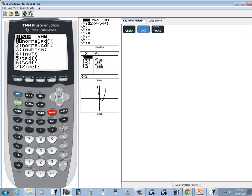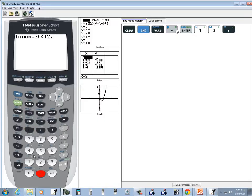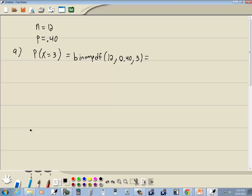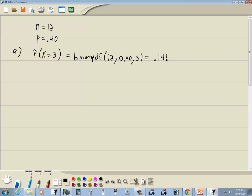Let's see what that gives us. Do second vars and choose binomPDF, then n which is 12, comma, 0.40, and then 3. You can put a closing parentheses if you want, but you don't need to. Press enter and round to four decimal places. The fifth decimal place is a 9, so it means we round up. This is 0.1419.